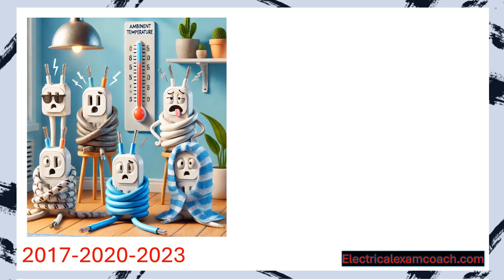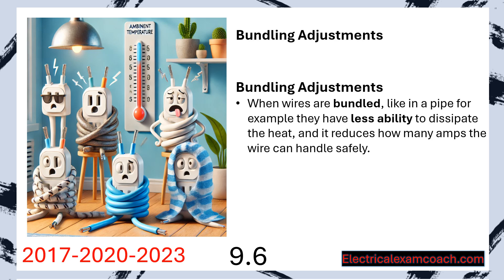Hey everyone, welcome back. I am the Electrical Code Coach from ElectricalExamCoach.com and this is lesson 9.6 in our video series. In our previous lesson, we learned all about bundling adjustments and how to de-rate them when wires are bundled inside of a pipe, cable, or raceway. In this lesson, we're going to be learning about ambient temperature corrections. It's very similar — we just pull from a different table, but it's the same style demand factor process.